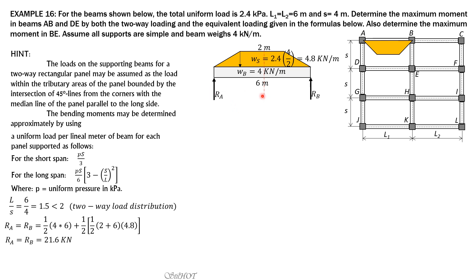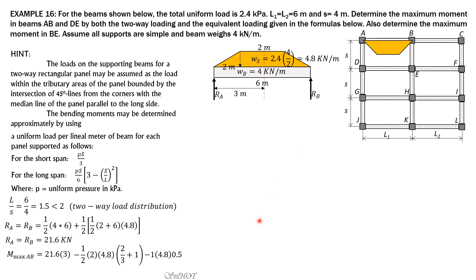RA acts at 3 meters from mid-span. The triangular portion is 2 meters, which is S over 2. Maximum moment for beam AB equals RA 21.6 times 3, minus the moment of the triangular loading — one-half of 2 times 4.8 times moment arm (2/3 plus 1) — minus the moment of the uniform portion, which is 1 times 4.8 times 0.5 — minus the moment of the beam self-weight, 3 times 4 times 1.5. Computing the maximum moment in AB gives 36.40 kN·m.